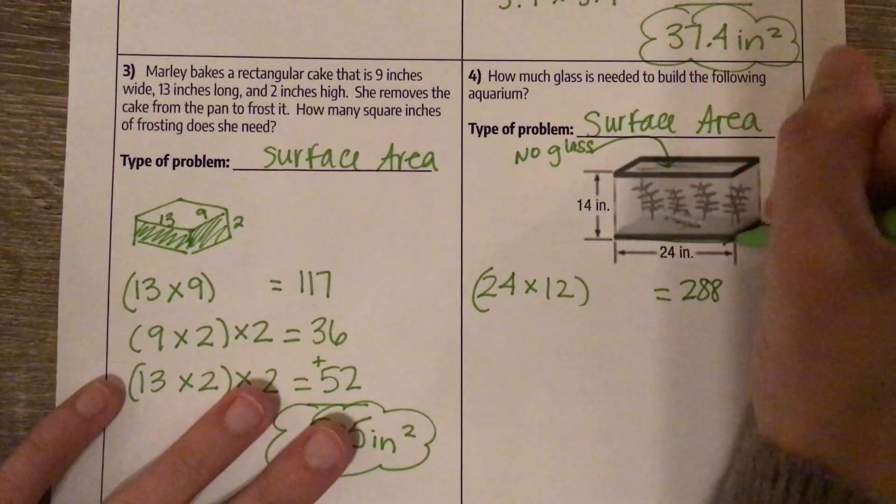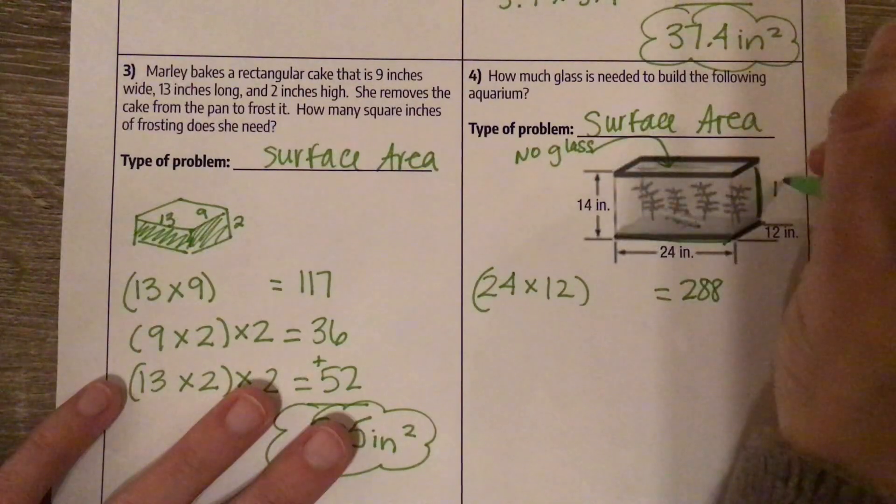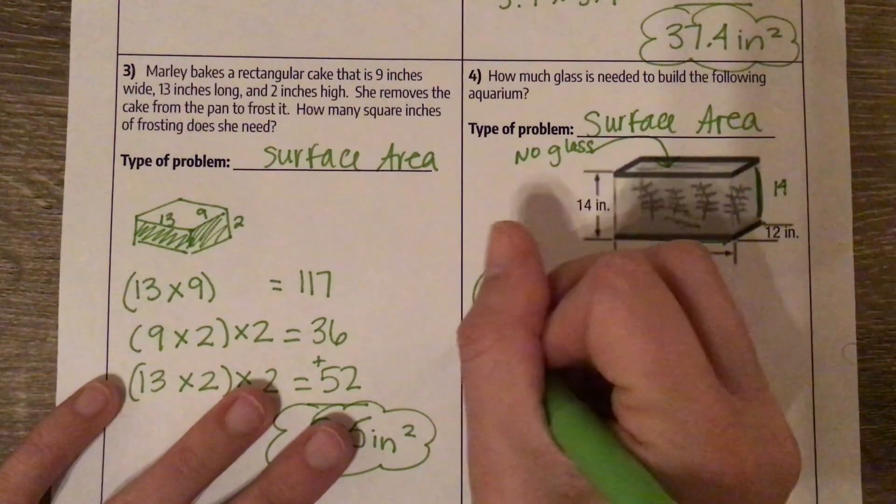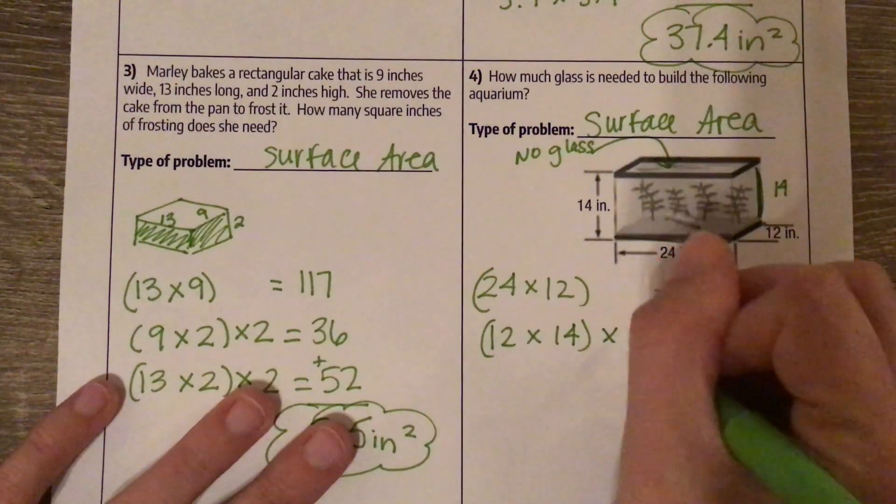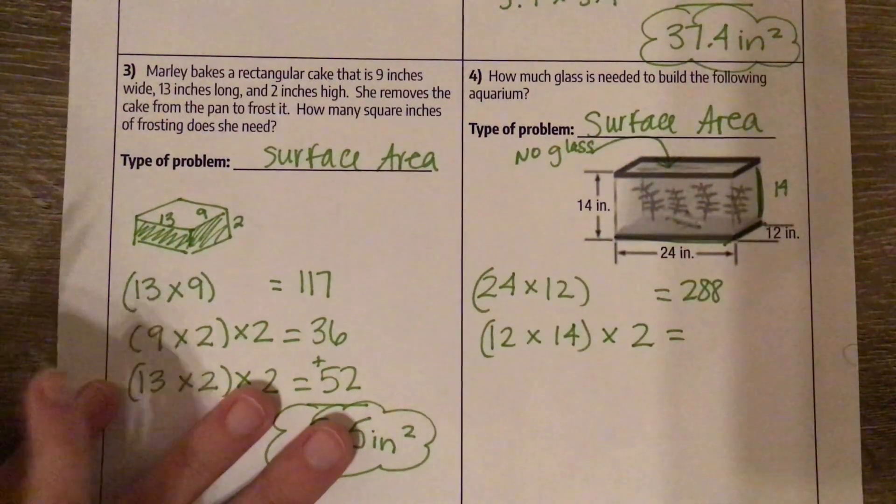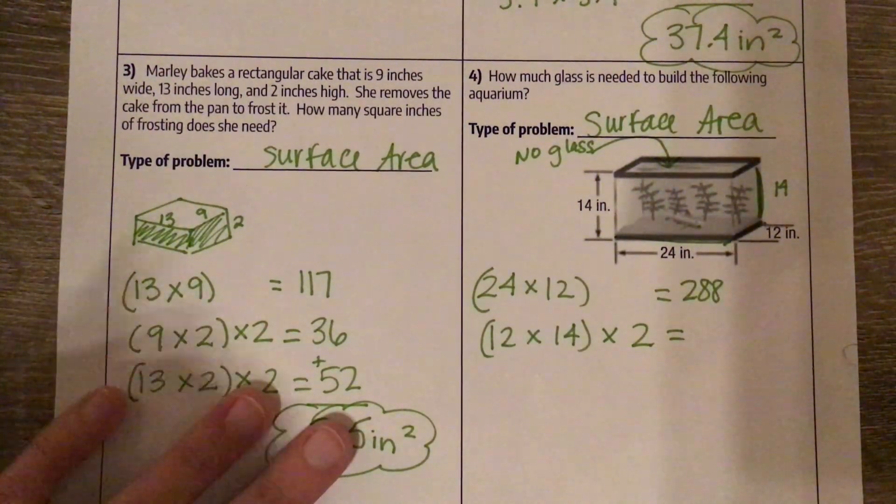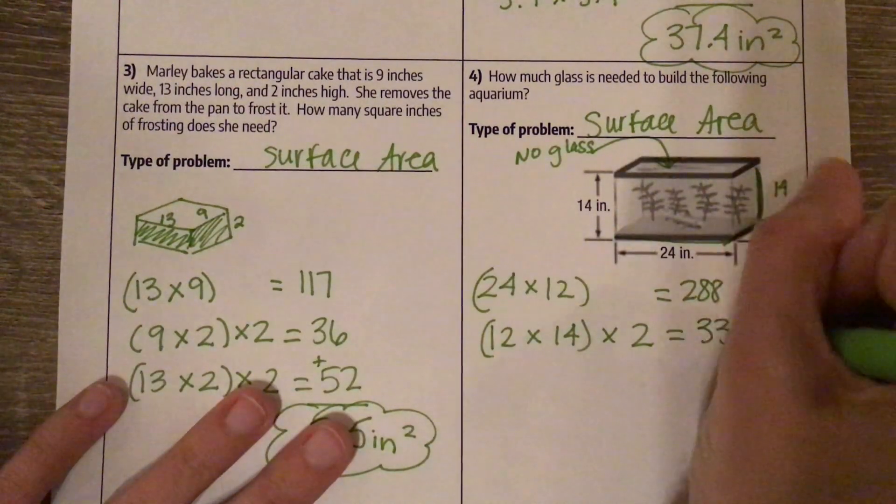Then this side here is 12 by 14. But there's two of those, so we multiply by 2. Which is 336.